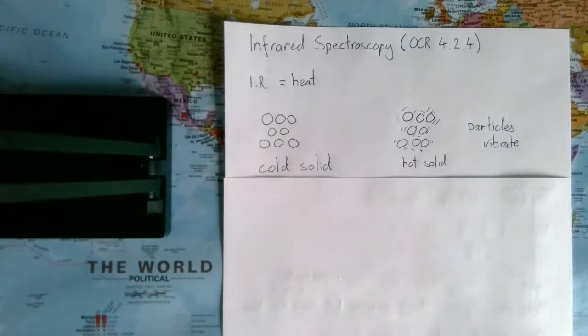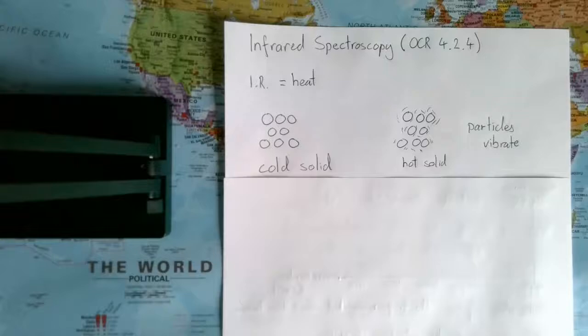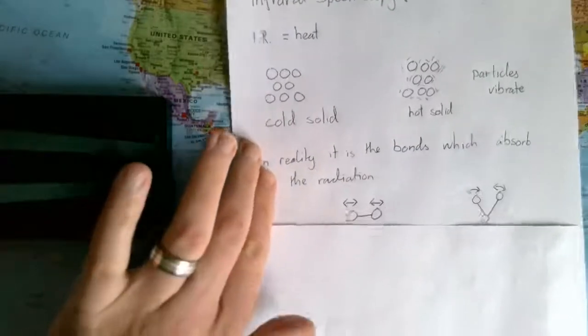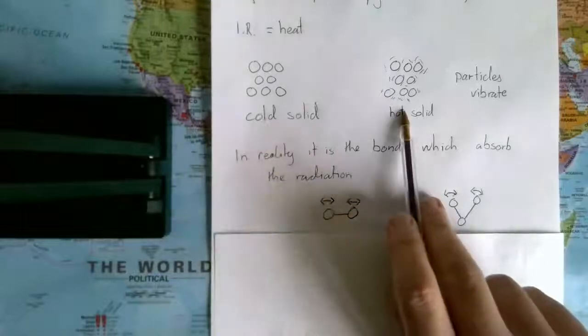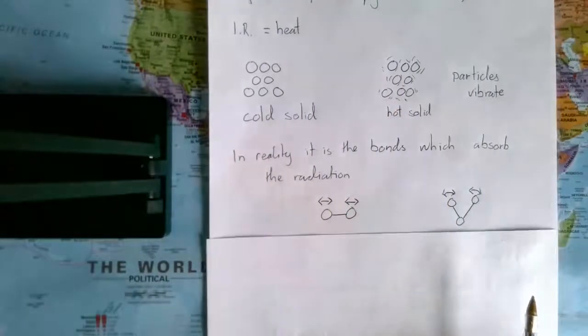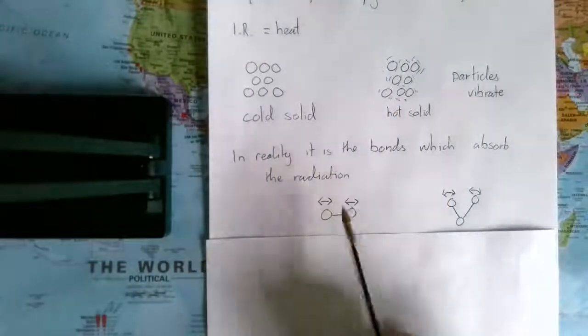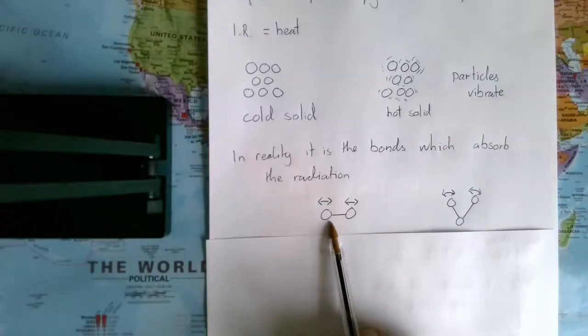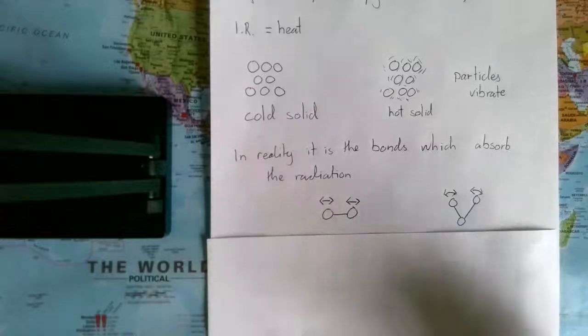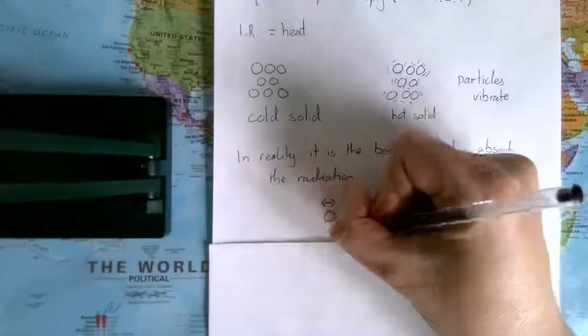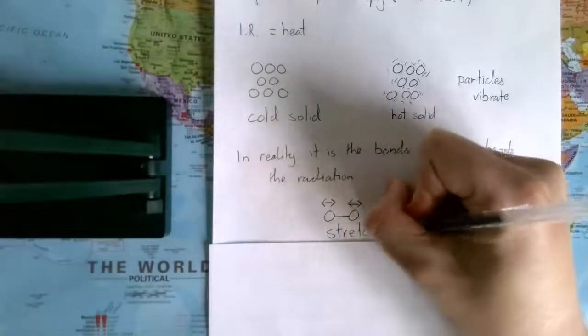Hopefully you remember the idea that infrared has an effect upon chemical substances. What we're going to do now is take that idea just a little bit further. In reality, when we go from this cold solid to this hot solid, this vibration is actually happening with the bonds. Here is my diatomic molecule, and you can see that the atoms can vibrate back and forwards, and this is known as stretching.